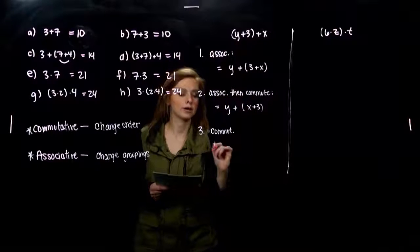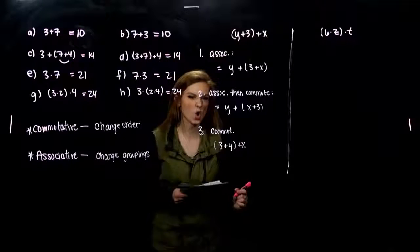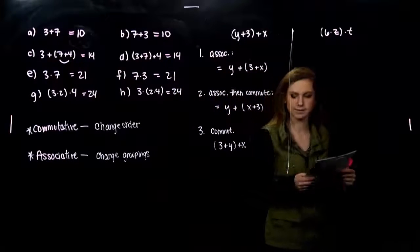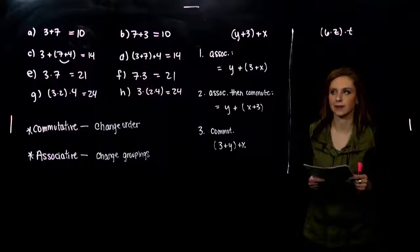Or I could have just started at the beginning and commuted some things around. So changing three and y. I could write it as three plus y plus x. They're all equivalent. They'll get you the same result if you're given an x and a y value.